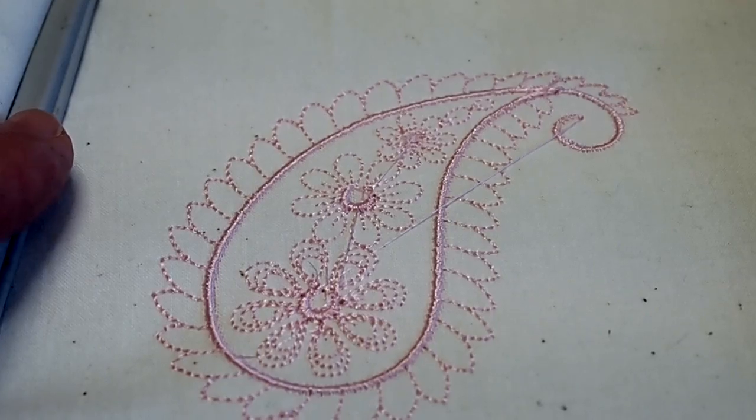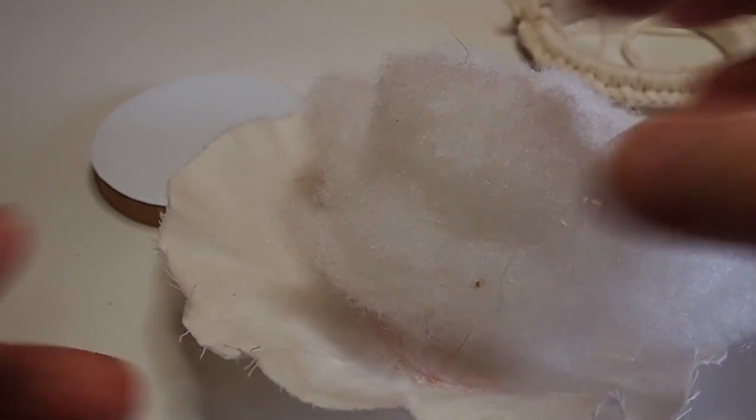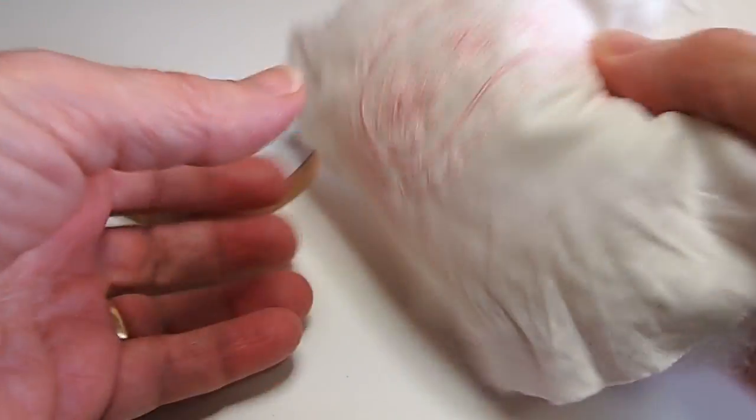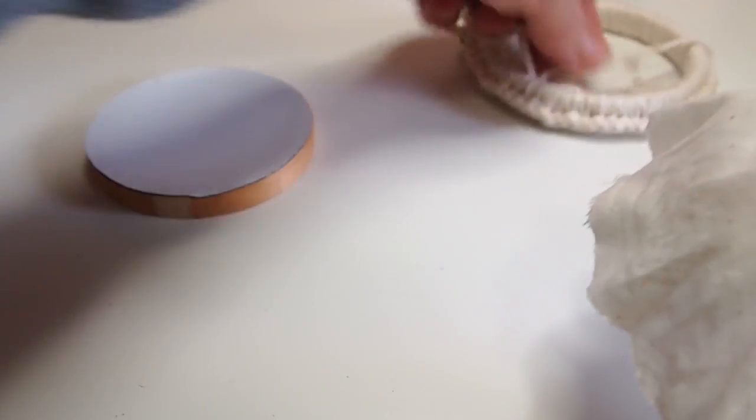Now I have my design stitched out. I've also stitched it out on a generous piece of fabric so that I can cut it with plenty of room to work with my embroidery hoop. Now we're going to tear off our stabilizer. Once our stabilizer is removed, we cut our fabric to the size that we'll be able to work through our embroidery hoop.